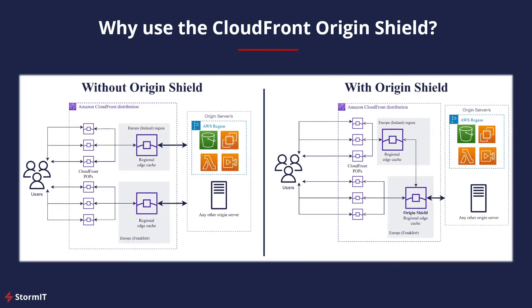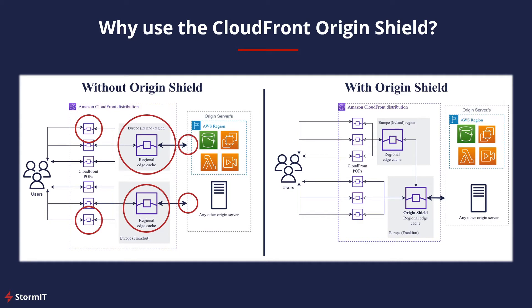The main reason to use Origin Shield is connected to the normal behavior of CloudFront. When using CloudFront, your user requests are first routed to a nearby CloudFront edge location. If the object isn't cached at that location, the request is sent to a regional edge cache. When your users are in different geographical regions, requests can be routed through different regional edge caches, each of which can send requests to your origin for the same content.